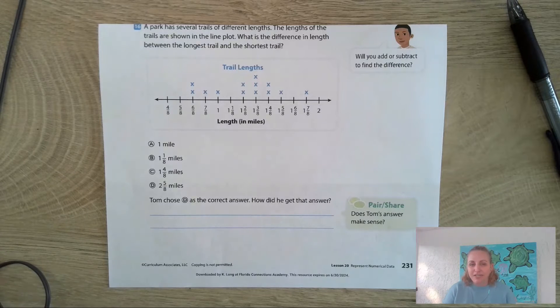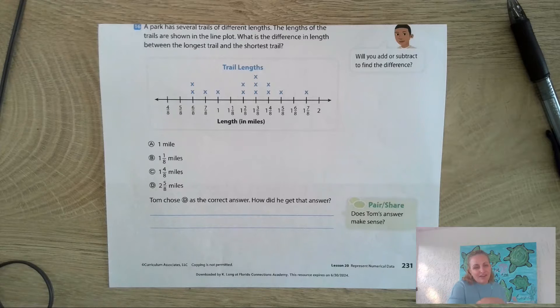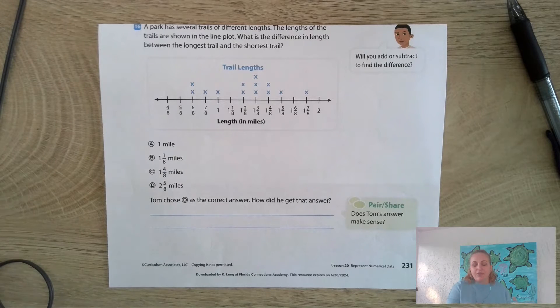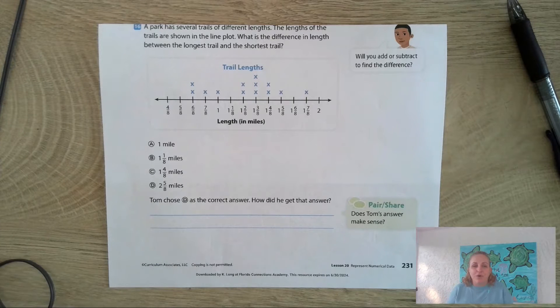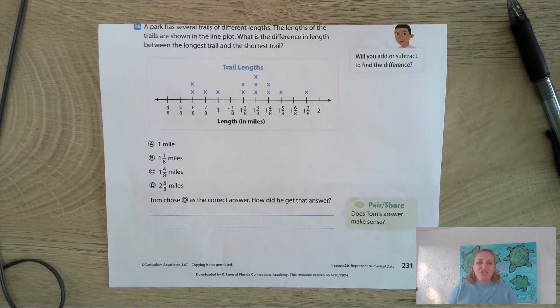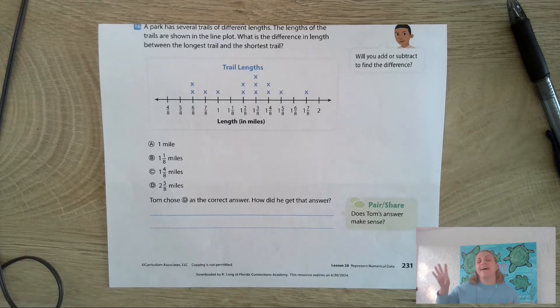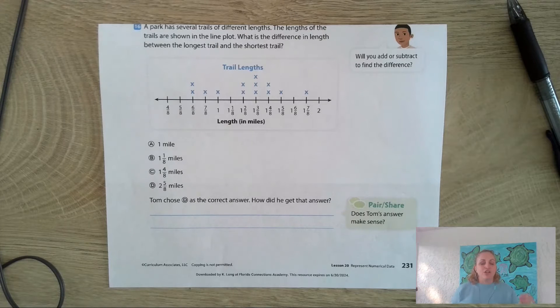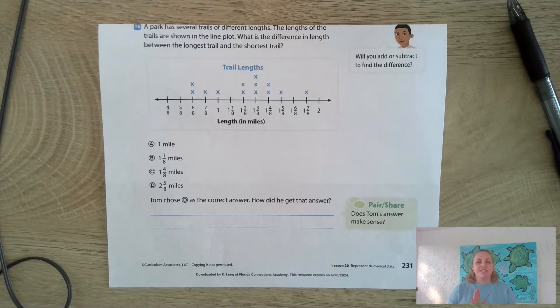I want to remind you first of all what median, mode, and range mean. The median is the middle - remember the median of the road is the middle of the road. The mode is the number that appears the most. And the range is the difference between the high and low, and to find the difference we need to subtract.